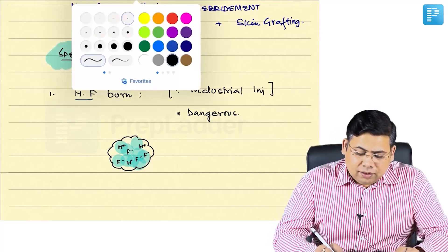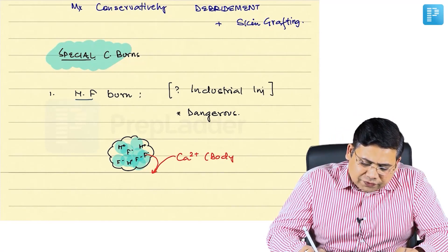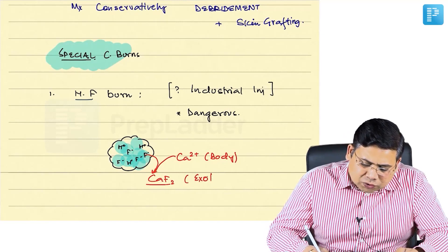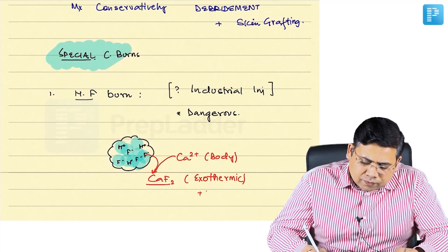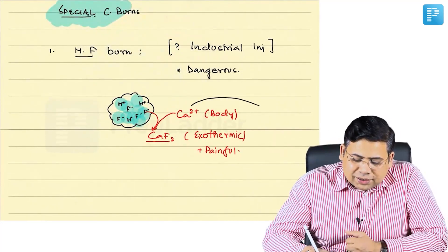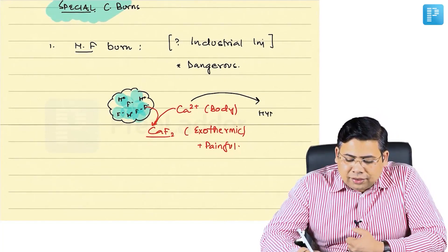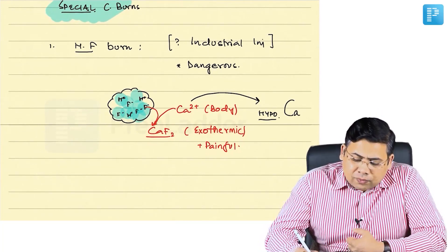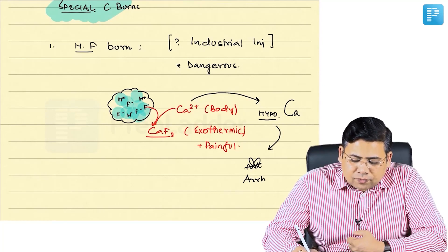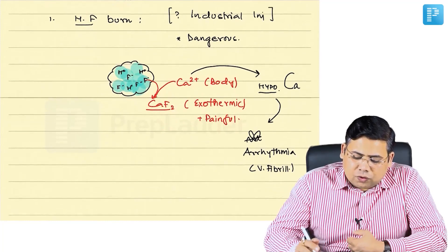In the wound, HF disintegrates into H⁺ and F⁻. This fluoride has high affinity to bind with calcium in the body, forming calcium fluoride. This reaction is exothermic and therefore very painful. Meanwhile, the calcium in the body is depleted by the fluoride, resulting in hypocalcemia. This hypocalcemia affects the heart, causing arrhythmia — most commonly ventricular fibrillation.